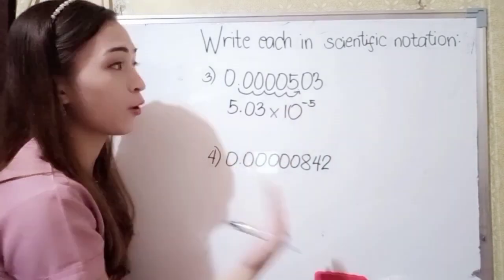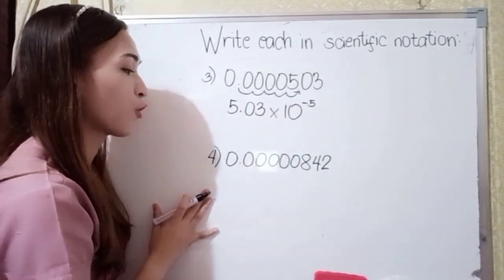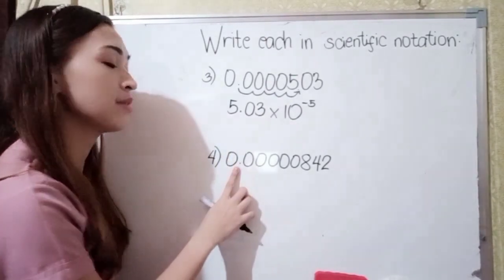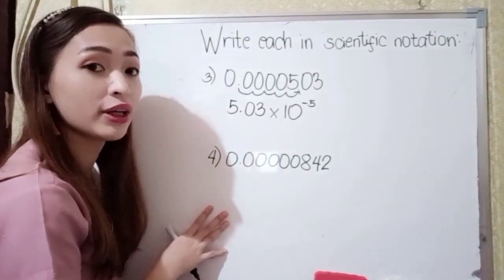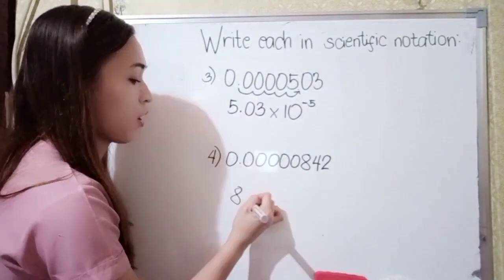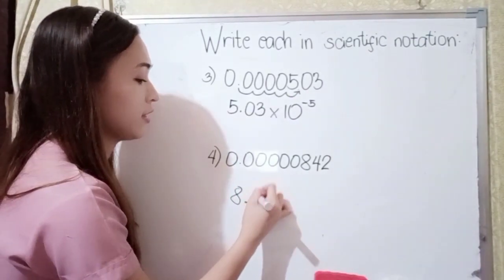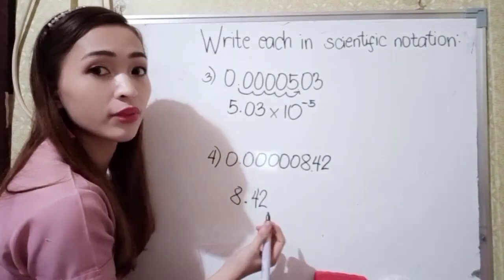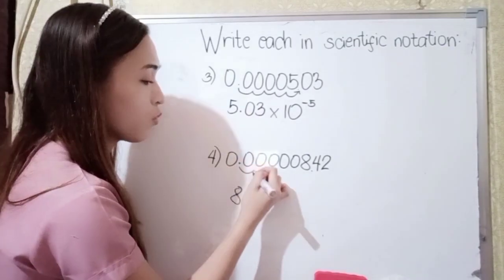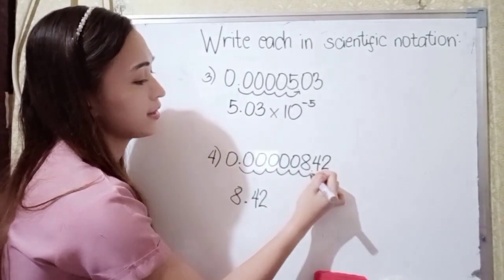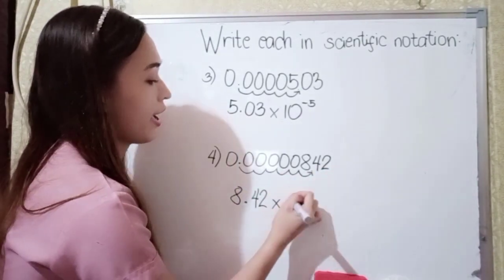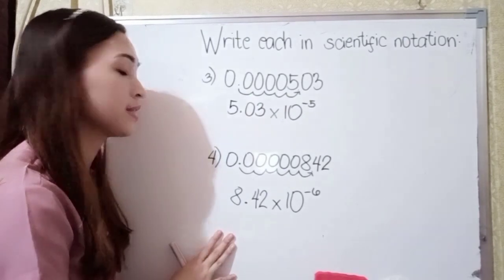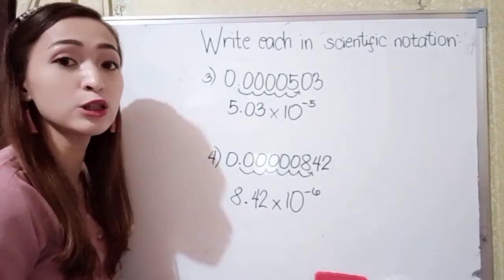Earlier we moved the decimal point from right to left, giving a positive exponent. Here in number 4, we have 0.0000842. Let's move our decimal point to the right of our non-zero digit. So we have 8.42. Counting from left to right: 1, 2, 3, 4, 5, 6. Since we move from left to right, we have times 10 raised to negative 6. So our answer in number 4 is 8.42 × 10⁻⁶.